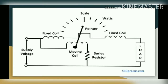This is the diagram of the dynamometer type wattmeter. In this, you can see there are two coils — one is a fixed coil and another is a moving coil. The fixed coil is divided into two halves, one at each end, and in the middle of this fixed coil there is a moving coil, which is termed as the voltage coil. The fixed coil is termed as the current coil.